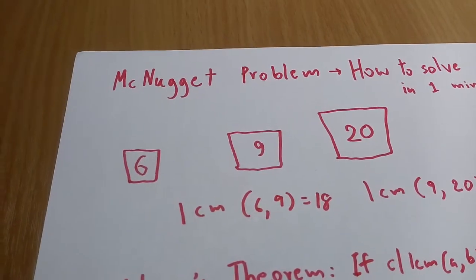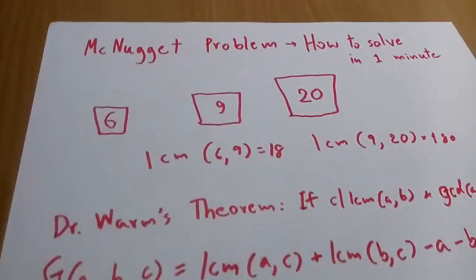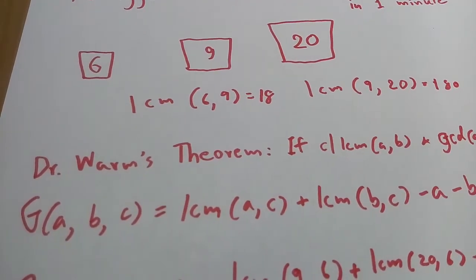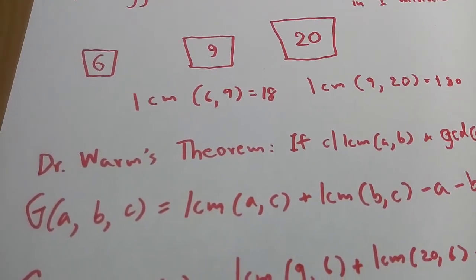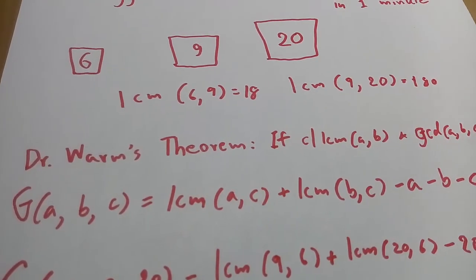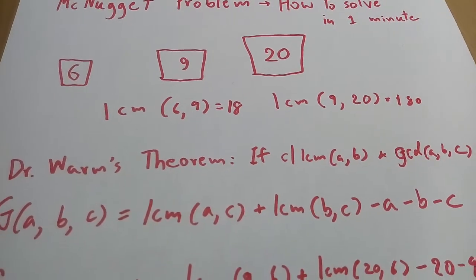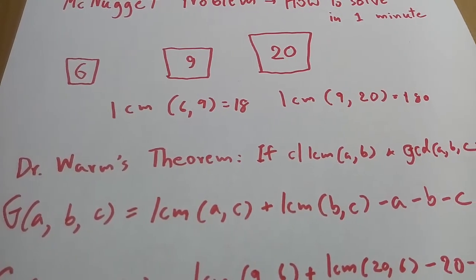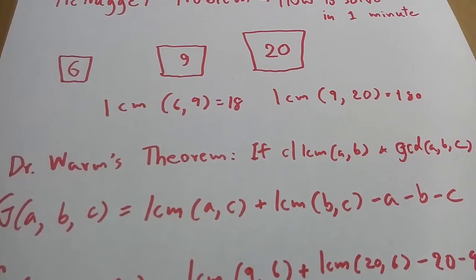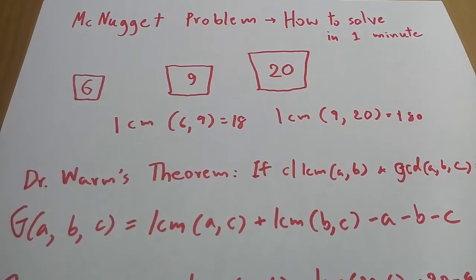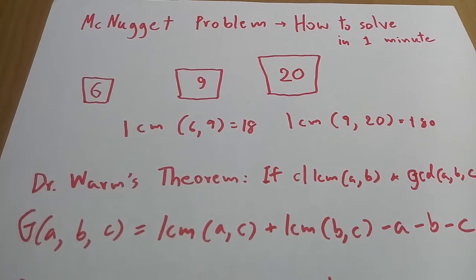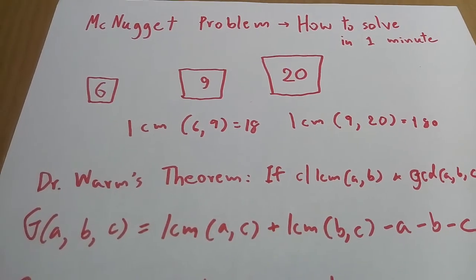So using Dr. Wolm's theorem, the Frobenius number G(a, b, c), if C can divide the LCM of A and B, then you will have G(a, b, c) equals LCM of A, C plus LCM of B, C minus A minus B minus C. Just stick to the C, and you remember that C will appear everywhere.